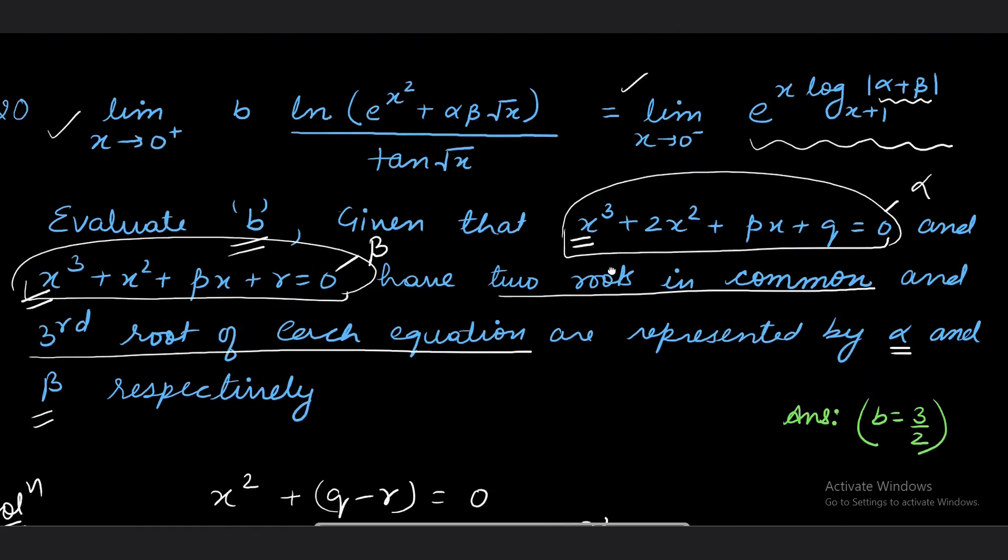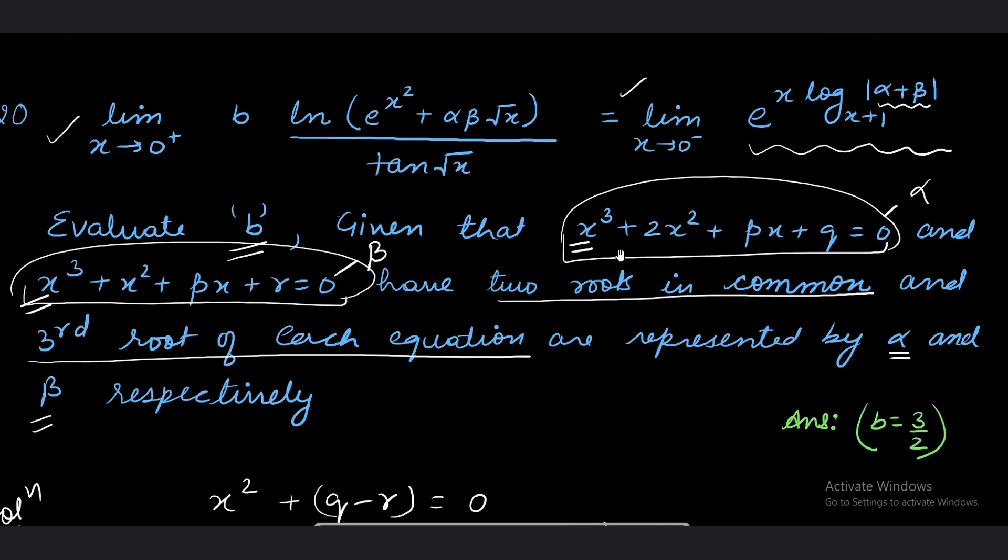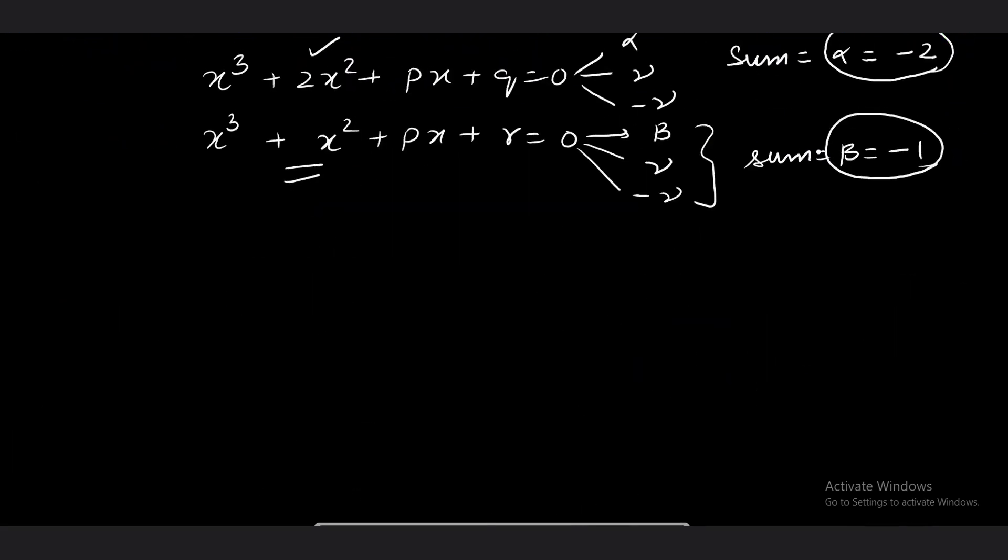Writing alpha and beta values, let's see what the question becomes. First I'll write the right-hand side limit because it has no unknown constant. It will be e^(x log|α+β| base (x+1)). Let's evaluate this limit as x → 0⁻. Since |α + β| = 3.